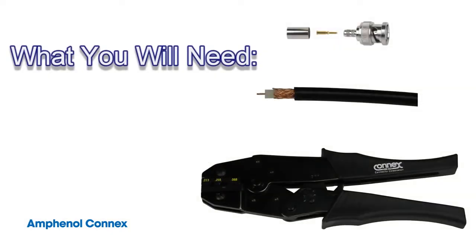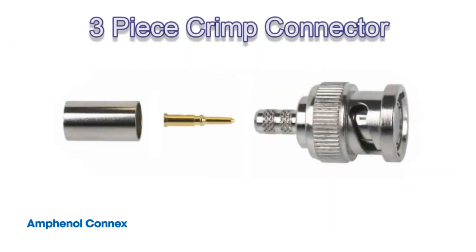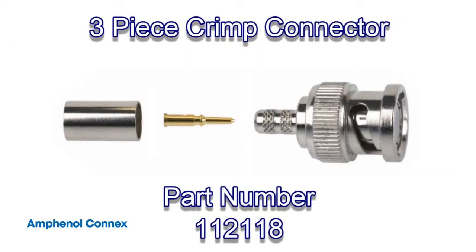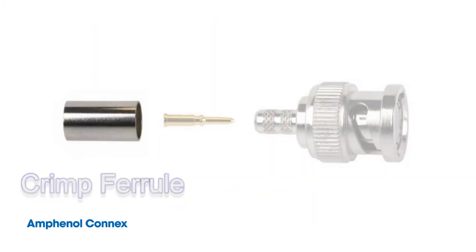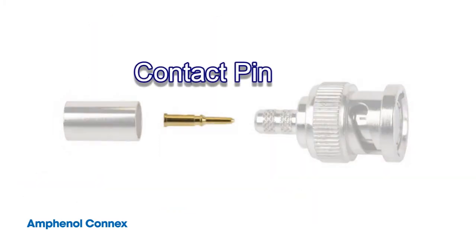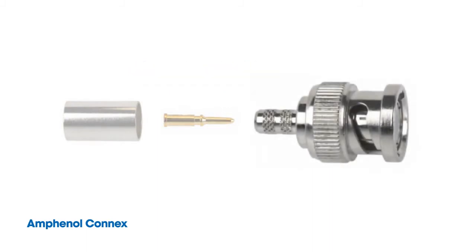What you'll need for this tutorial. A 3-piece crimp connector, in this case Amphenol Connects part number 112118, which is comprised of a crimp ferrule, a center contact pin, and a main body.